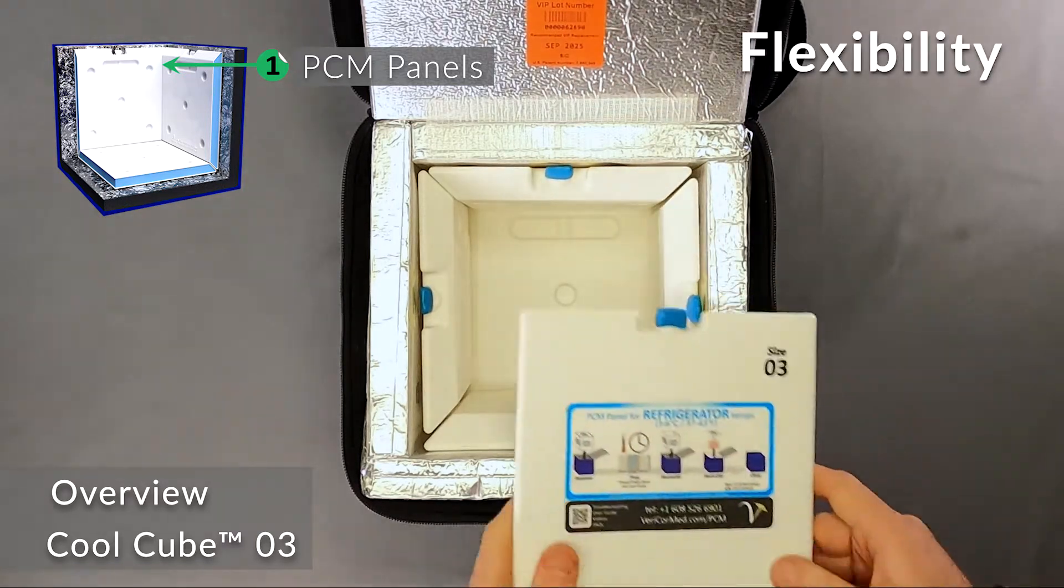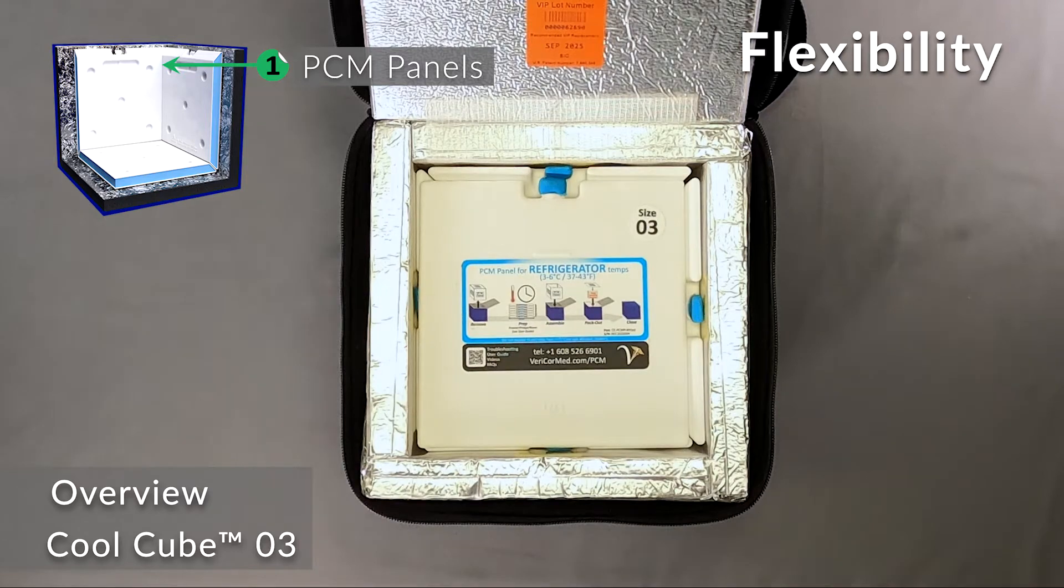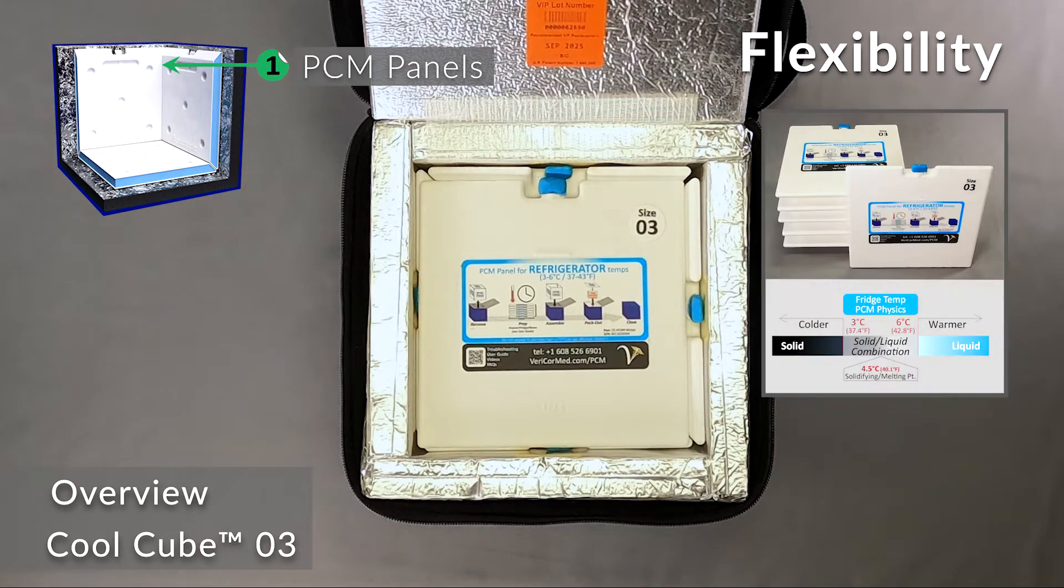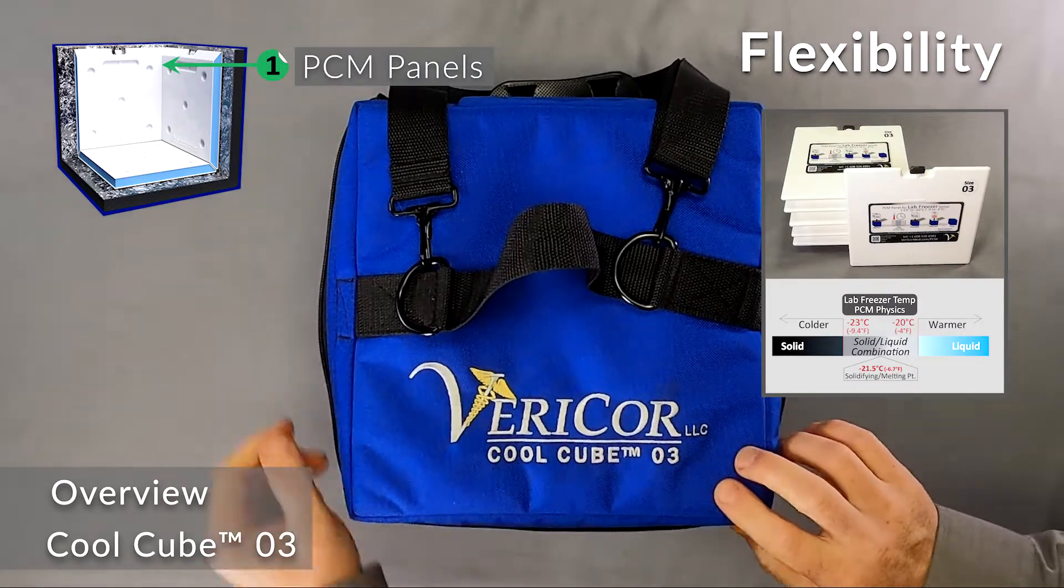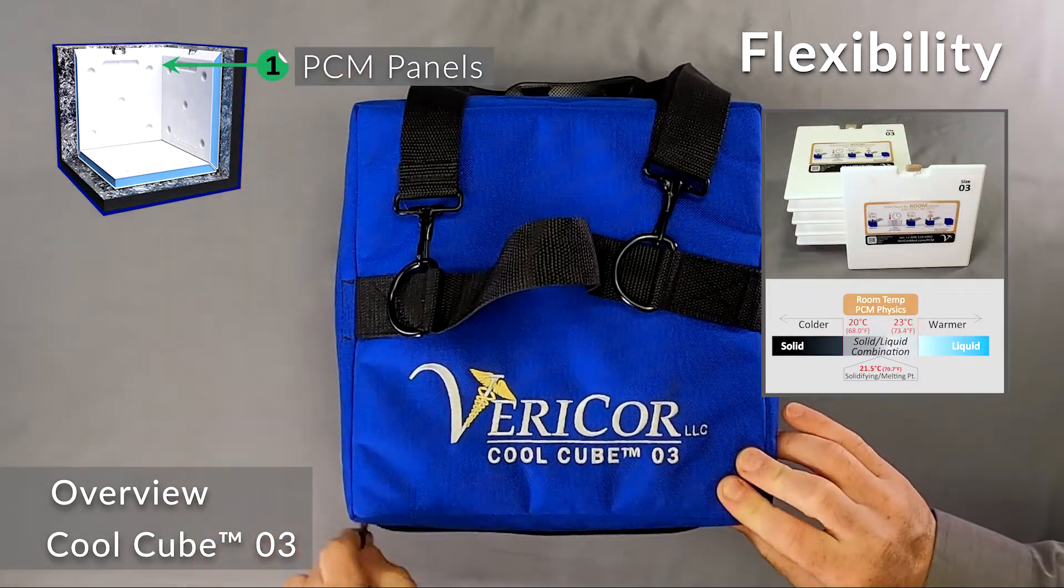Flexibility. By swapping out the PCM panels, the CoolCube 03 can maintain a refrigerator temperature, lab freezer temperature, or room temperature in any environment.